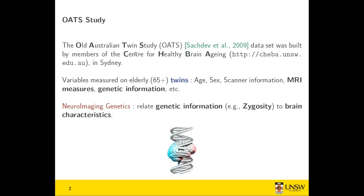These people had a study called the Older Australian Twin Study. They measured variables on elderly twins — age, sex, scanner information, MRI measures, genetic information, and so on. Their group is mainly working on relating genetic information and brain characteristics — the hot topic of neuroimaging genetics. The genetic information I will focus on is called Zygosity: simply whether the twins are identical or non-identical.